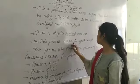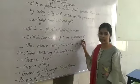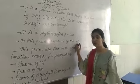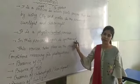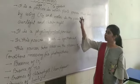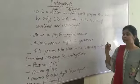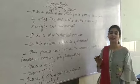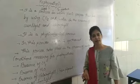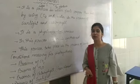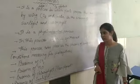In this process, sugar is synthesized. The production of sugar takes place by the process of photosynthesis, but this sugar is stored in many parts of the plant in the form of starch.